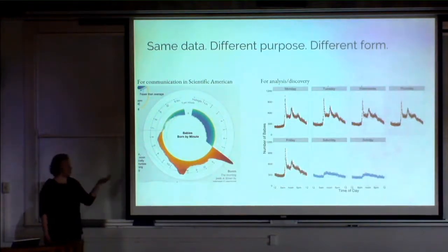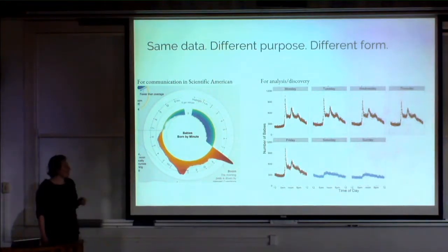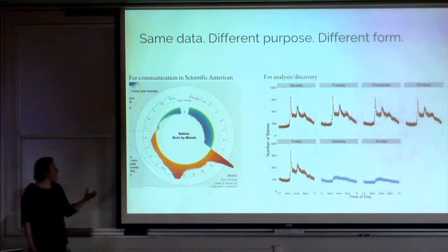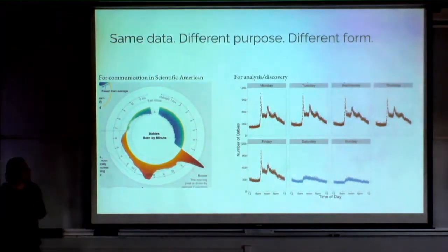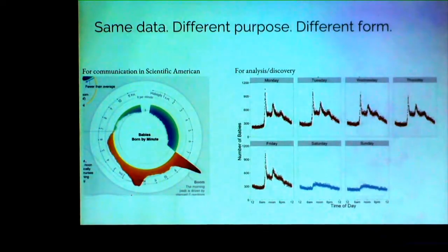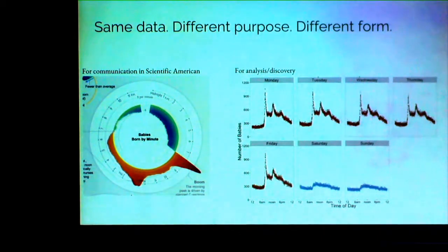You might make very different visual forms for these two different purposes. This is work I did on when babies are born, published in Scientific American last year. On the communication side, it's highly polished and intended to be immediately understandable and very attractive. On the analysis and discovery side — made for a talk about seasonality in data — it was okay and actually good to have repetition and extra information. These are clearly different purposes, and each one was really good at what it was trying to do.